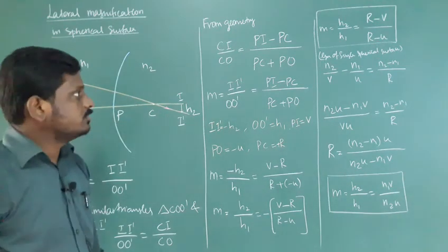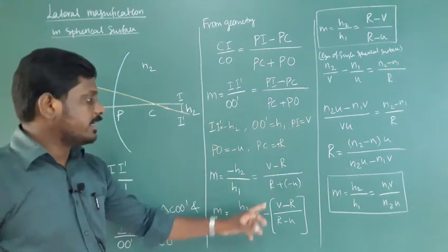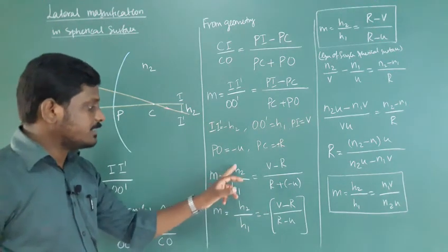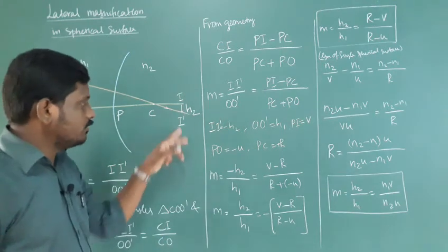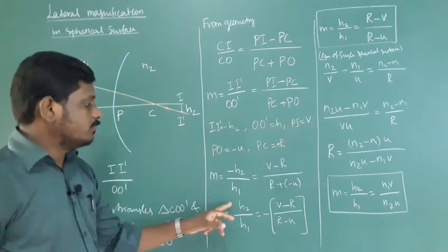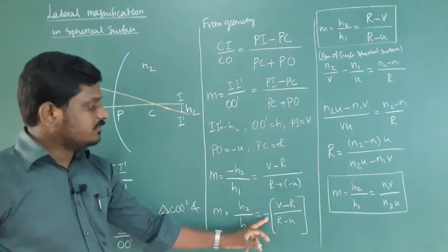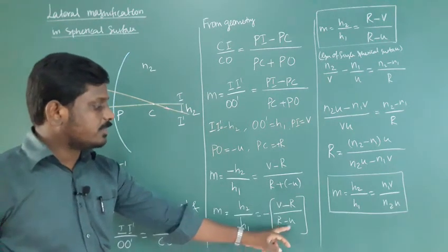Just substitute: V minus R by R plus minus U. Here M equals minus h₂ by h₁, because h₂ is in the downward direction, negative axis. Multiply by minus on both sides, so h₂ by h₁.